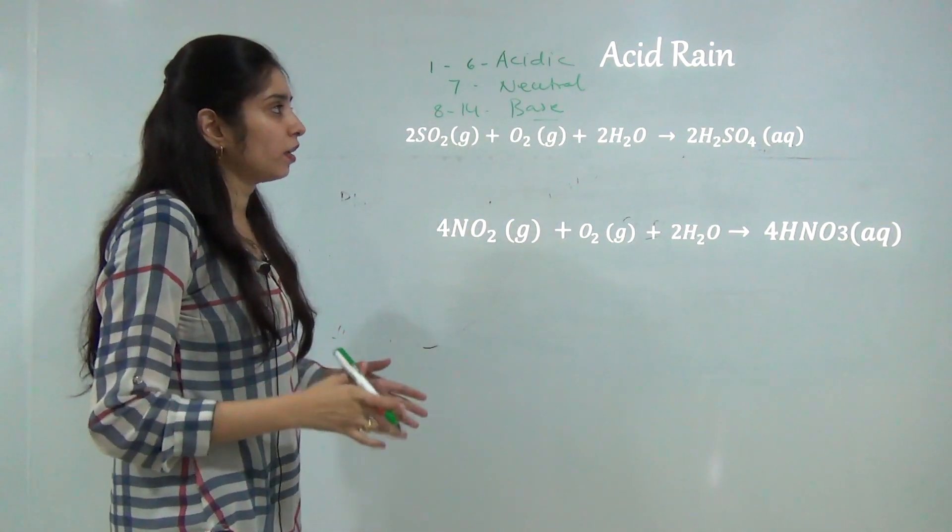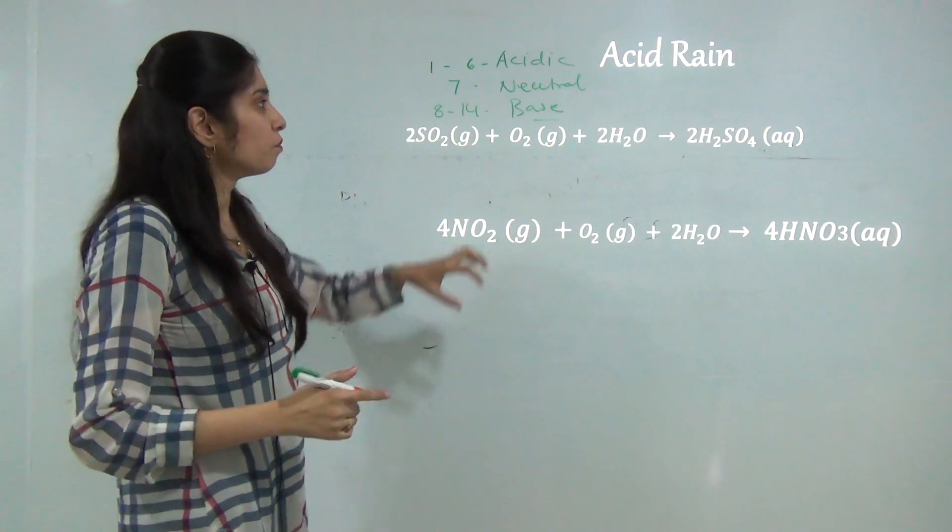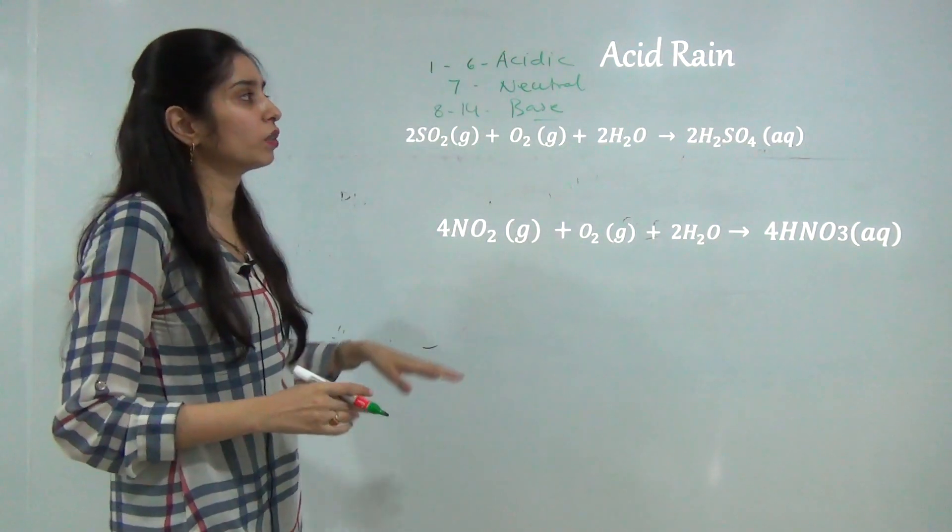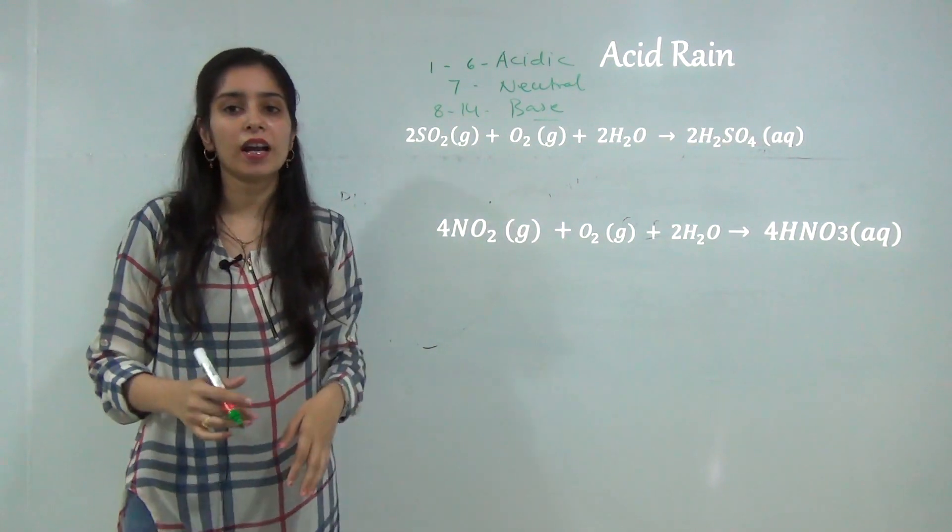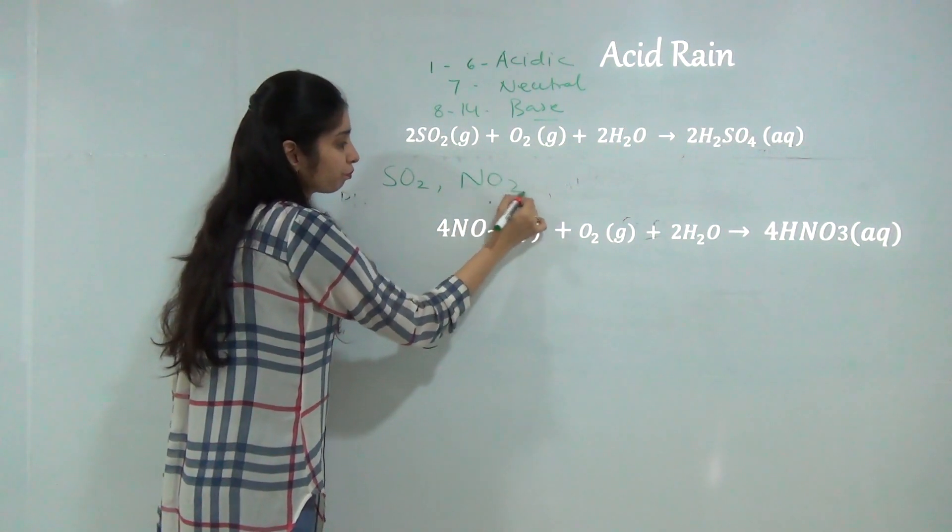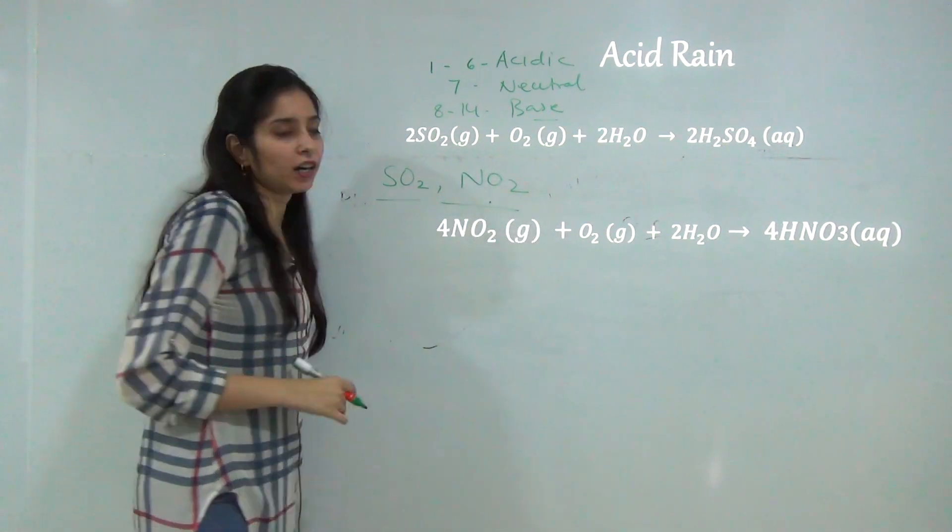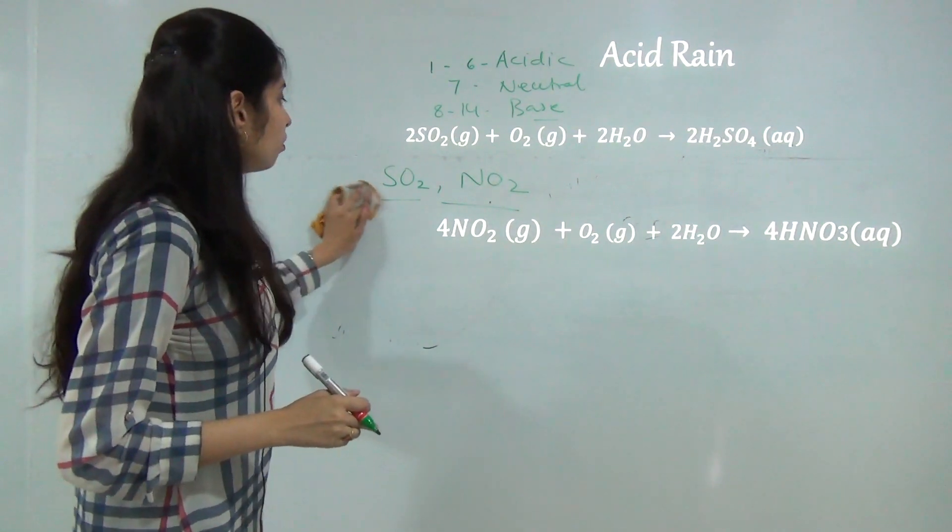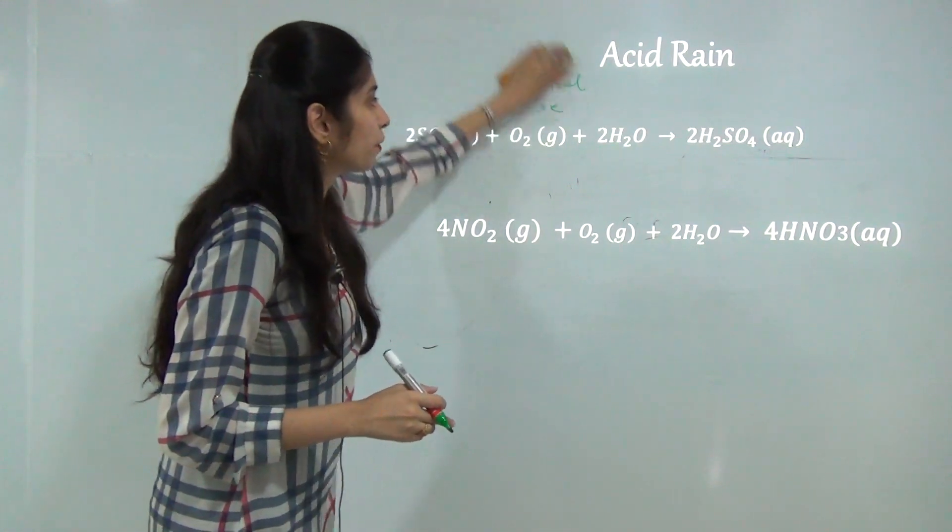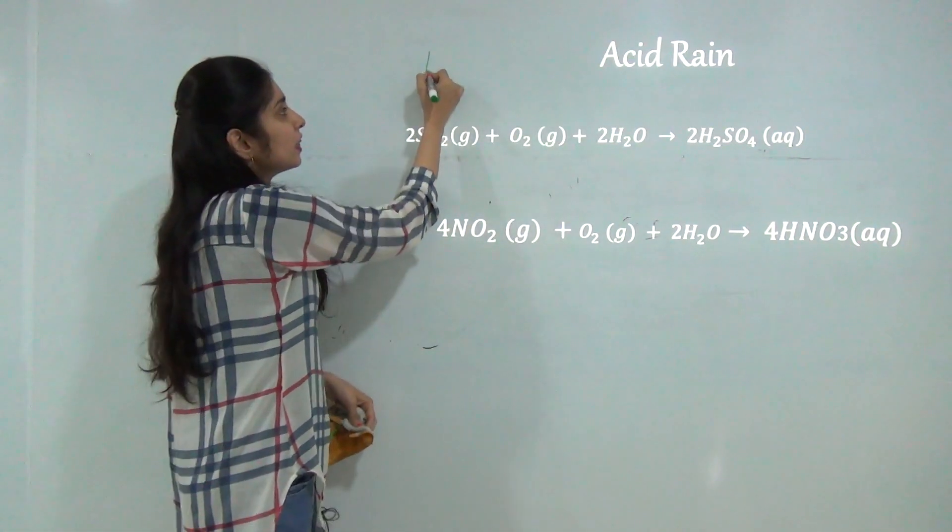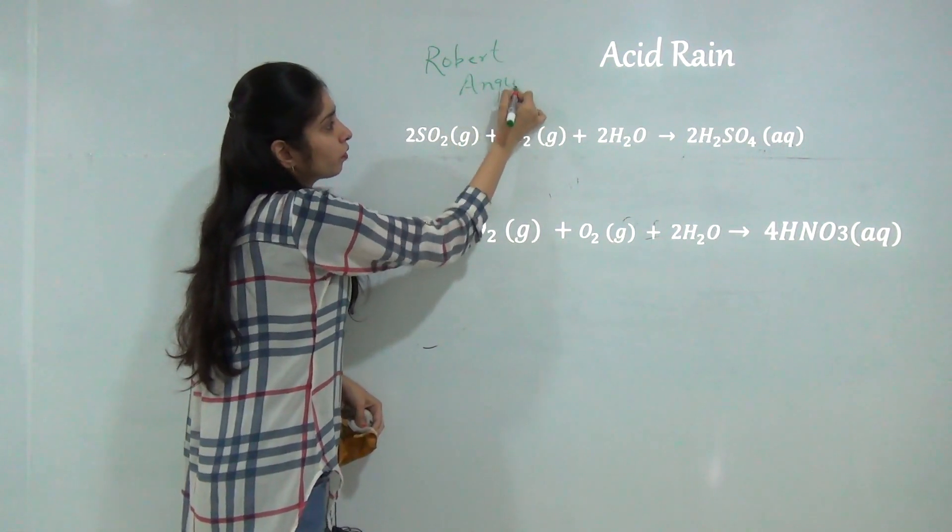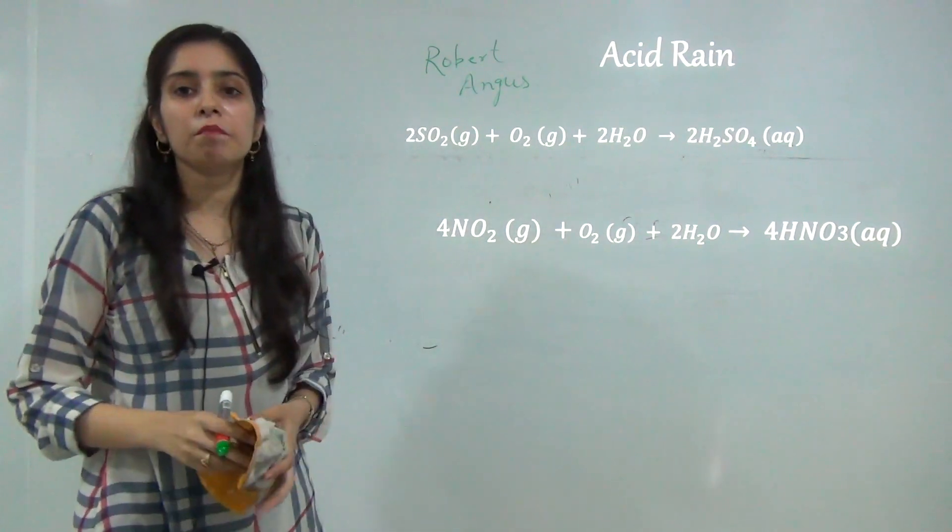In acid rain the water of rain is mainly highly acidic and it deposits to the earth. The main responsible gases for acid rain are SO2, sulfur dioxide and NO2. Both these gases are responsible for the acid rain. Acid rain was first given, the main concept of acid rain was given by Robert Angus in 1872 and it was first seen in Manchester, England.